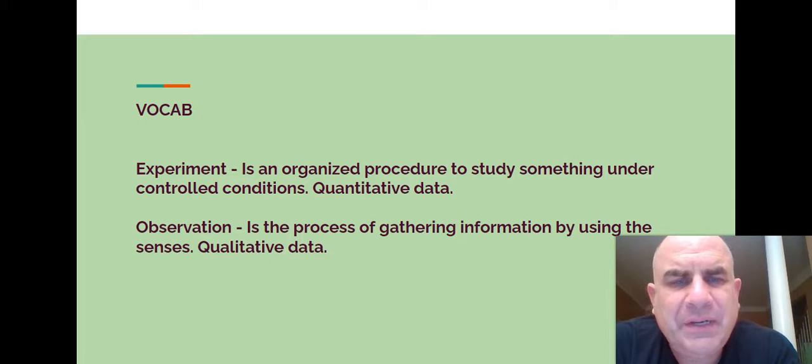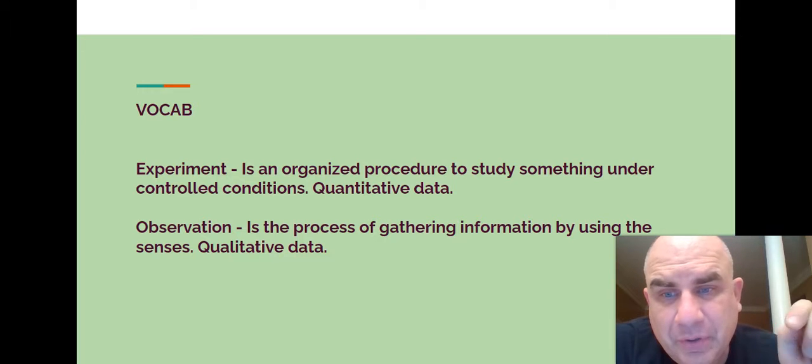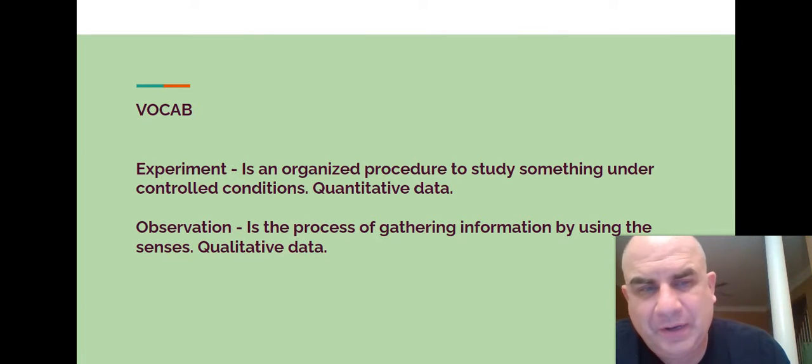An experiment is an organized procedure to study something under controlled conditions. Experiments normally have quantitative data. Quantitative has an N in it for number. Easy way to remember that. An observation is the process of gathering information by using the senses. Qualitative data. Notice we have two types of data. Quantitative is numbers. Qualitative, L for letter, letter for words. We're going to talk about that more as we go on here.